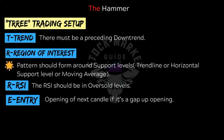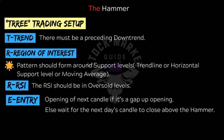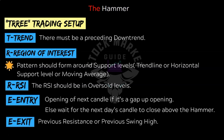The next step is E for entry. The entry level can be the open of the next candle if there is a gap opening; else wait for the next day's candle to close above the hammer, and only then take the entry. Finally, the last step is exit. You can take your target at the previous resistance level or previous swing high. Take your targets rationally as per your risk-taking capability. If the previous resistance or swing high is much higher and you don't expect it to be crossed, you can exit at 50% of that level, or use a 1:2 risk-to-reward ratio.